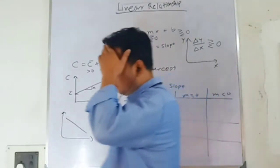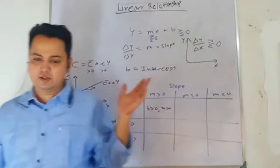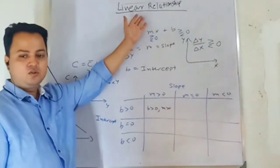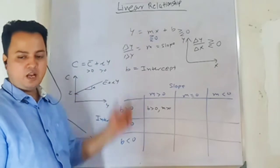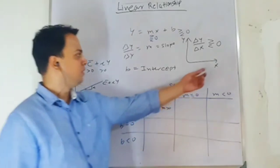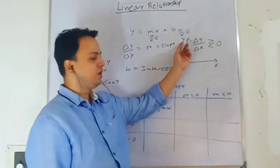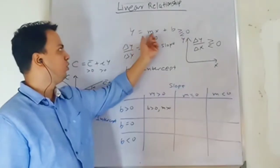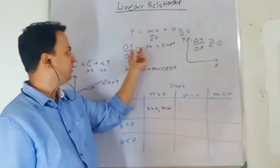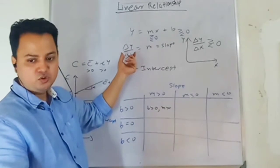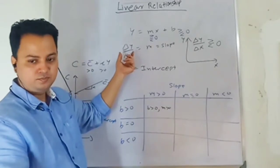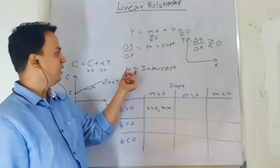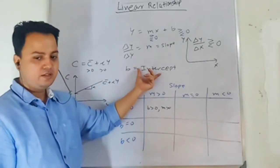We are looking at linear relationships. A linear relationship describes a straight line relationship between two variables, x and y, and mathematically it is represented as y equal to mx plus b. Here m is your slope and b is your intercept.